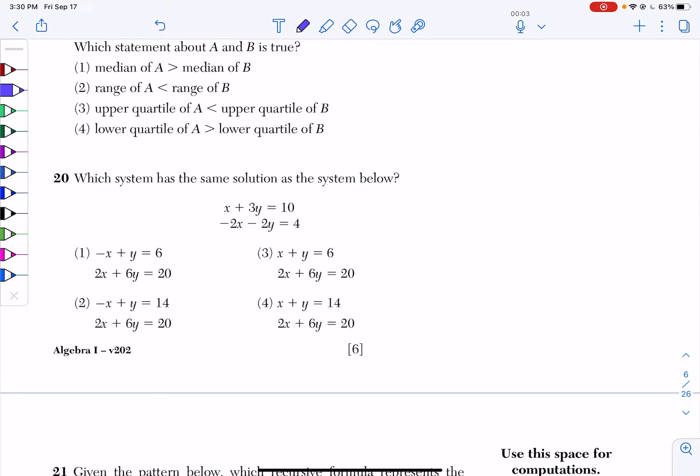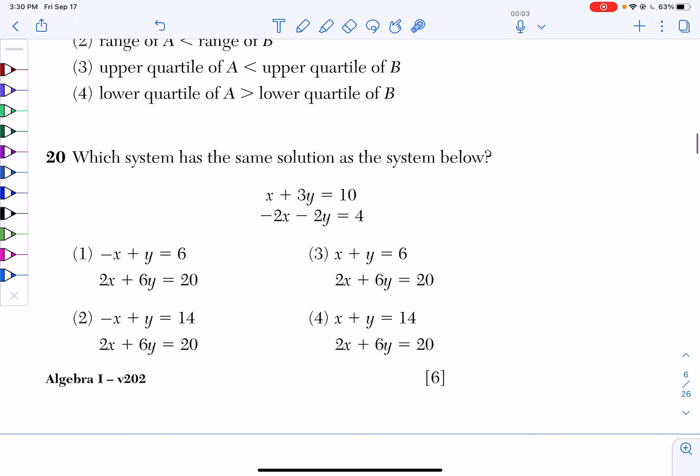Okay, so question number 20 from June 2021 is actually a little on the challenging side. It's a little different than some of the previous questions on systems in prior Regents exams. So let's take a look. It says, which system has the same solution as the system below? If I look, I have two equations: x plus 3y equals 10, and negative 2x minus 2y equals 4.